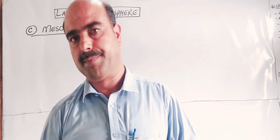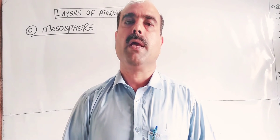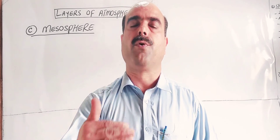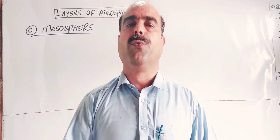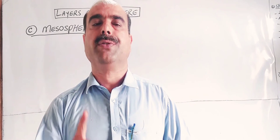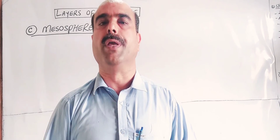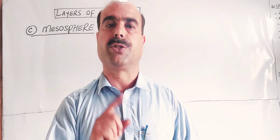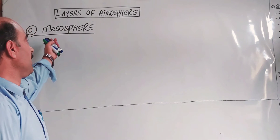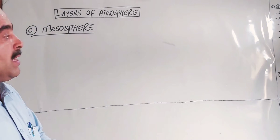Previously I have uploaded two videos on the atmosphere layers, available in the playlist. In the first video we discussed the troposphere, and in the second video we discussed the stratosphere and the ozonosphere. Now we will cover the third layer of the atmosphere and its characteristics.